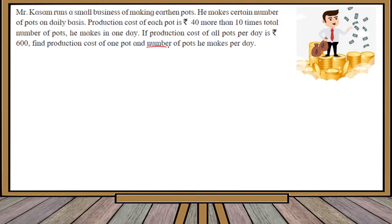One thing which is given here: number of pots he makes per day, let this be equal to x. According to the situation, what they have given us is the production cost of each pot.